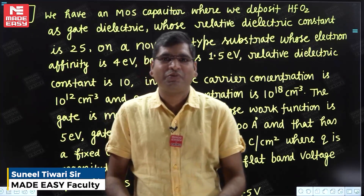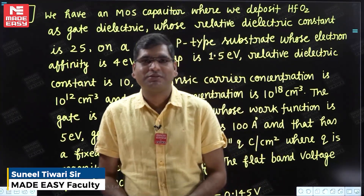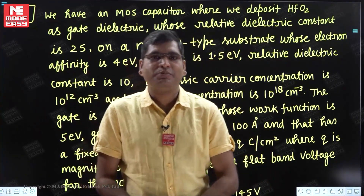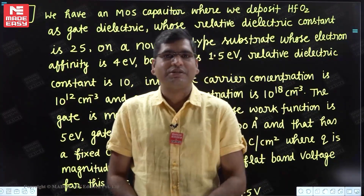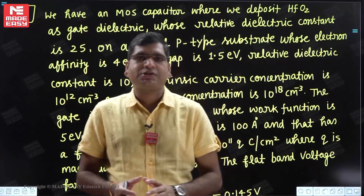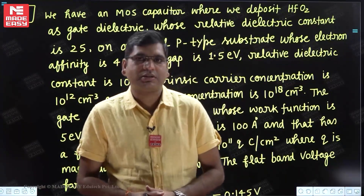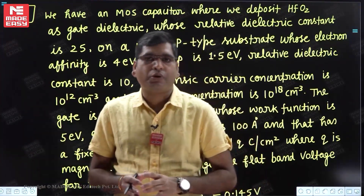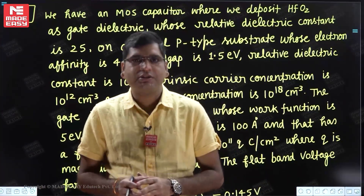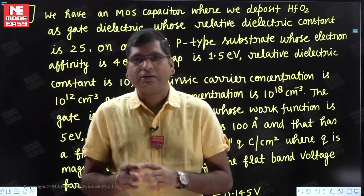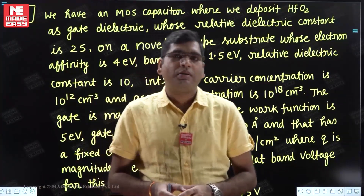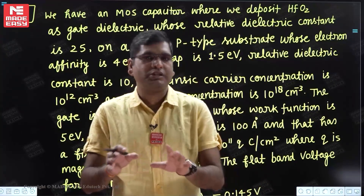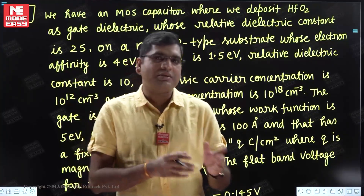Welcome back. Till now we have completed four chapters: semiconductor physics, junctions, basically the PN junction, optoelectronic devices, and BJT. Now we are moving towards the last topic, which is field effect devices. In field effect devices, we are going to deal with questions related to two important devices: first is the MOS capacitor and the second one is the MOSFET.